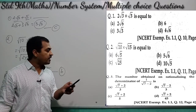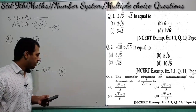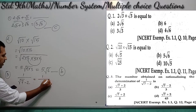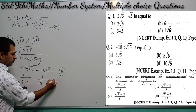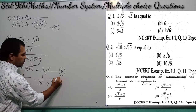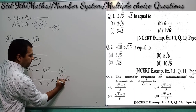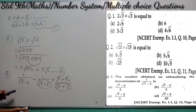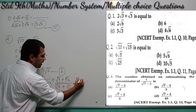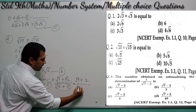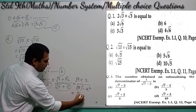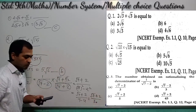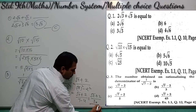Question number 3 asks for the number obtained on rationalizing the denominator of 1/(√7 − 2). To rationalize, multiply numerator and denominator by the conjugate (√7 + 2). The denominator becomes (√7)² − 2² = 7 − 4 = 3. So the answer is (√7 + 2)/3. Option number A is correct.